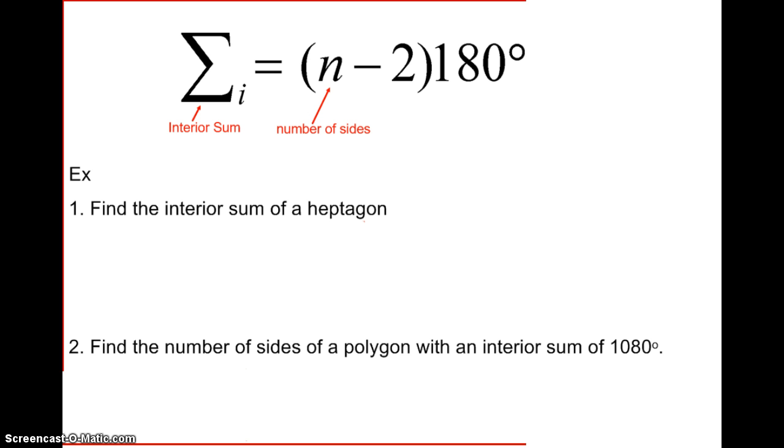So our interior sum is equal to the number of sides minus 2. That part gives us the number of triangles, and we multiply that by 180.